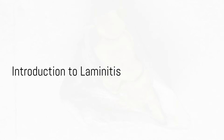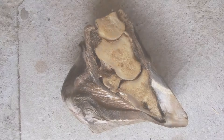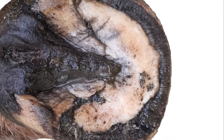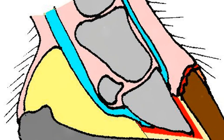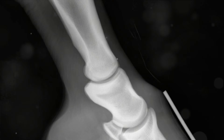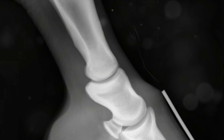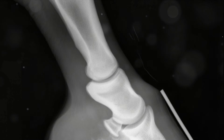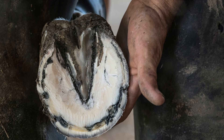Laminitis mainly affects horses, ponies, and donkeys, but it can also affect bovine dairy cows. Laminitis is a recurring and painful condition. It's a disorder that impacts the sensitive tissues known as laminae, which bond the hoof wall to the pedal bone.